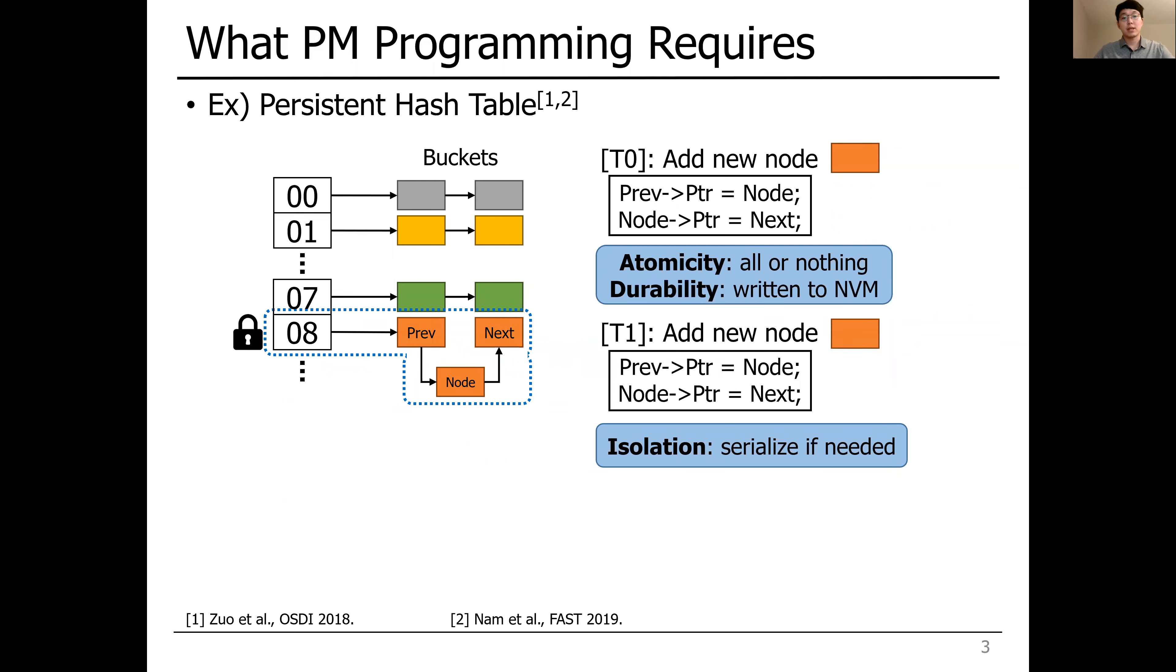As a result of atomicity, durability, and isolation, data structures should be consistent at all times. Consistency is application-dependent. In this particular example, the persistent hash table must be in a consistent state, even with concurrent updates.